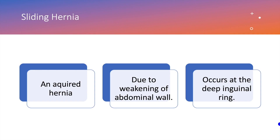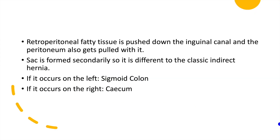Sliding hernia is an acquired hernia which occurs due to weakening of the abdominal wall. It occurs at the deep inguinal ring, lateral to the inferior epigastric vessels. When retroperitoneal fatty tissue is pushed down the inguinal canal, the peritoneum gets pulled with it and creates a sac. Since the sac has formed secondarily, it differs from classic indirect hernia. If it occurs on the left side, the sigmoid colon may get pulled in; if on the right side, the cecum may get pulled in.